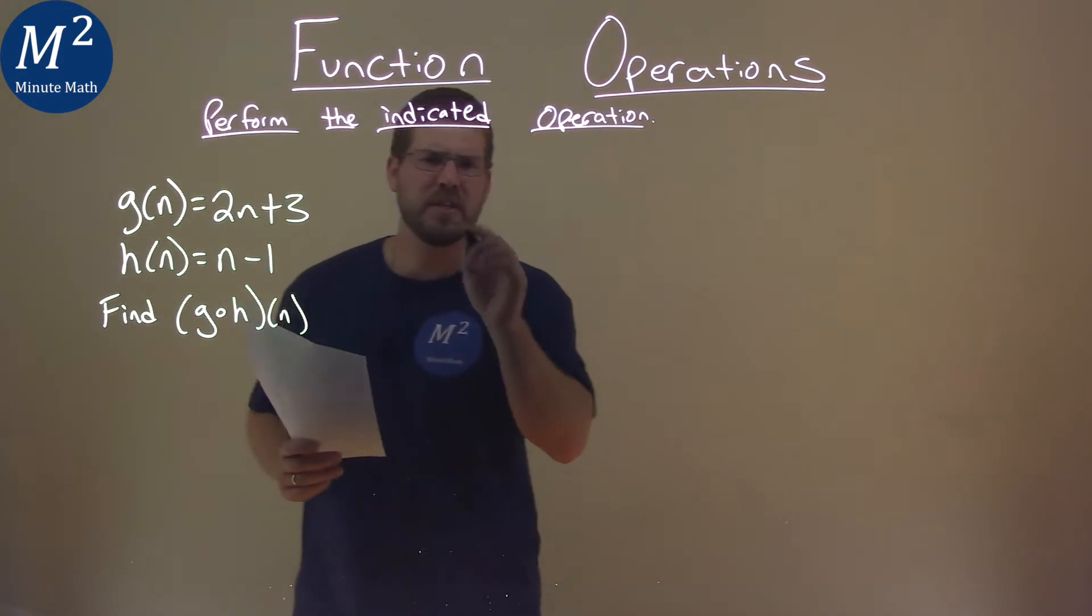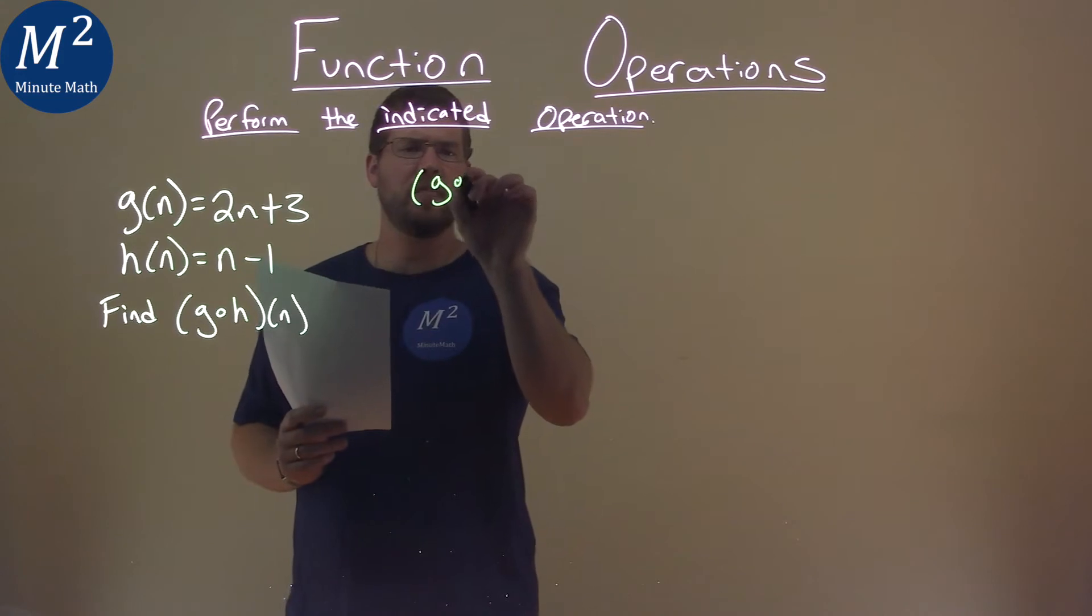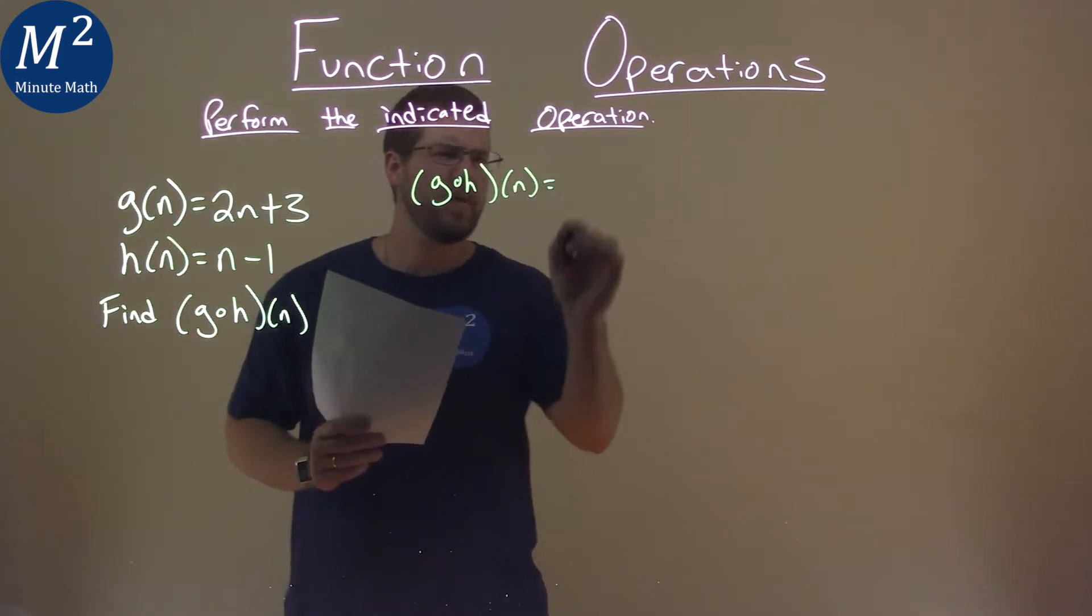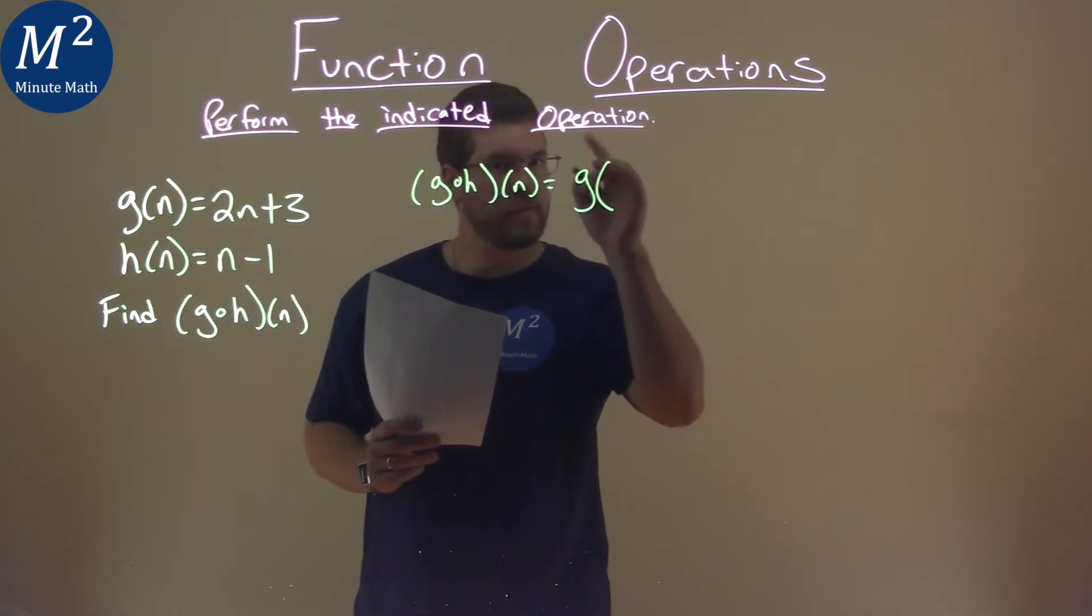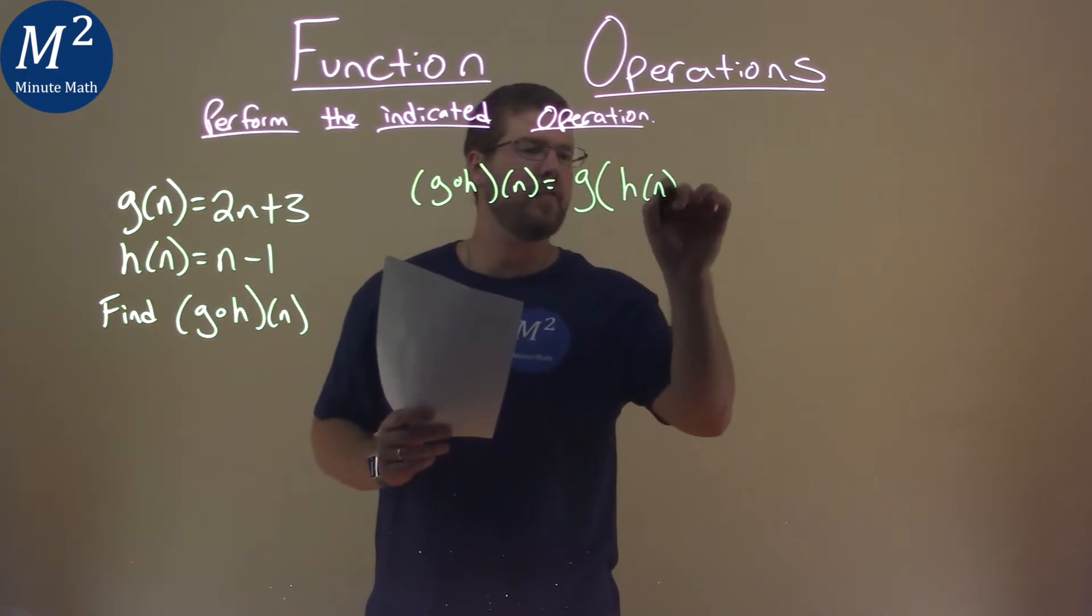Well, what is G of h of n? That is equal to G of, written like this, h of n.